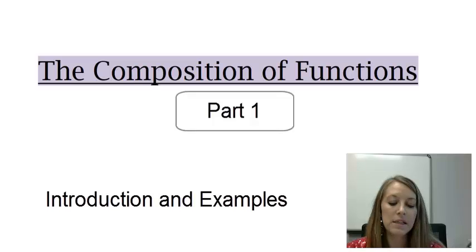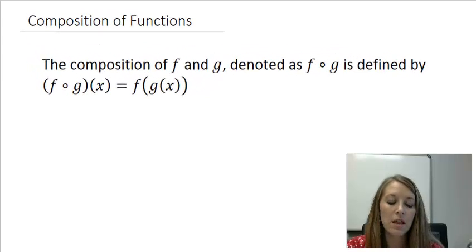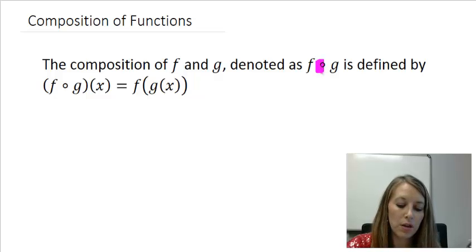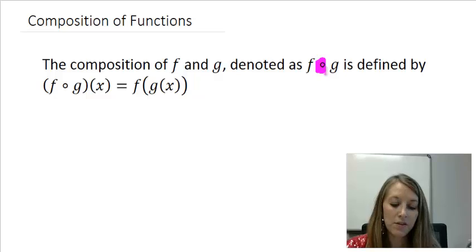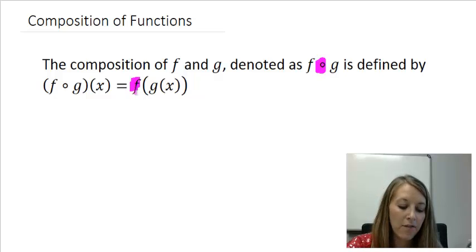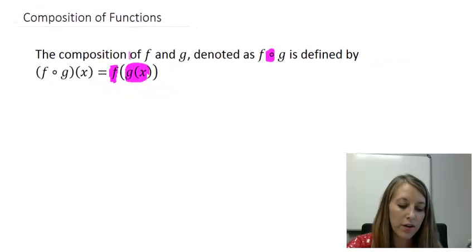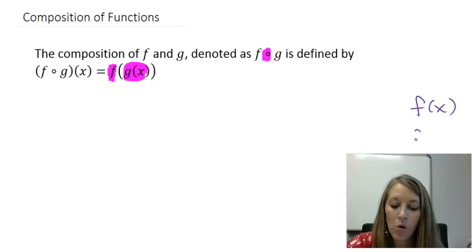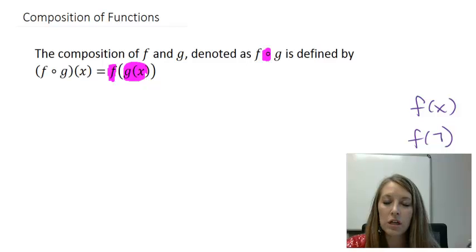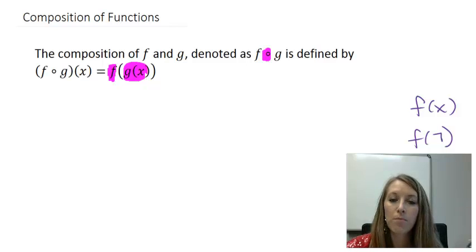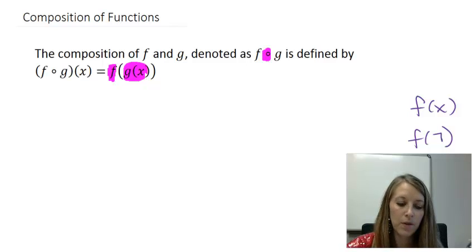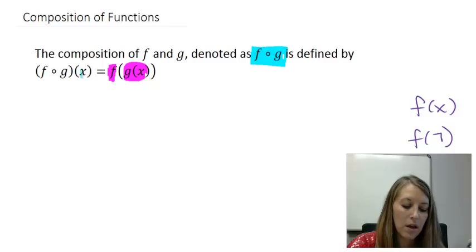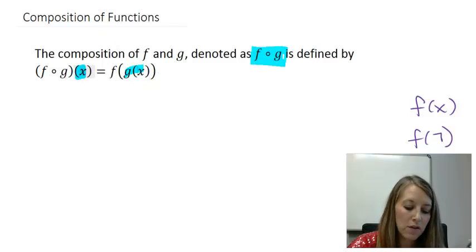The next section that we're going to be going over is the composition of functions. So let's learn what the definition is. The composition of functions, and the official way that this is denoted is by this little circle here in the middle, but it's pronounced f of g, is defined just like it sounds, when we take our f function and we substitute in our g function. So a lot of times we say f of x or f of 7, but here we're taking one function and we're substituting it in for the other function. So we are composing functions, or a function within a function.